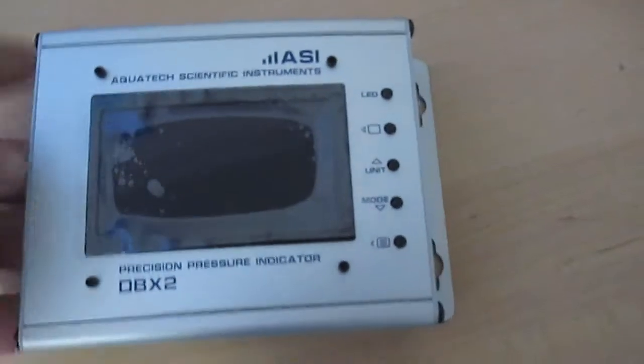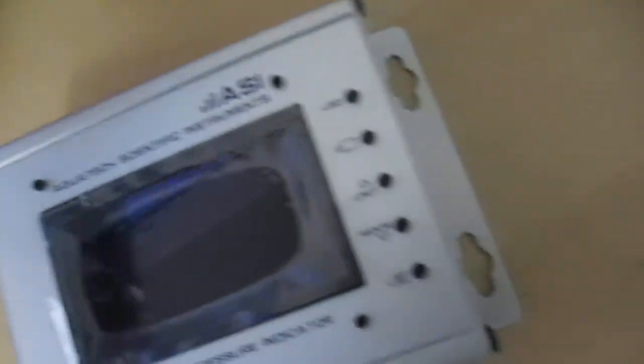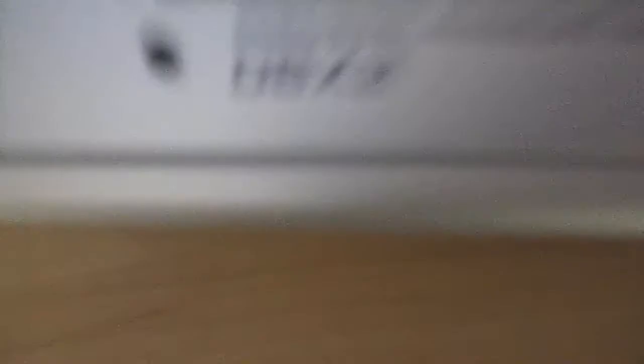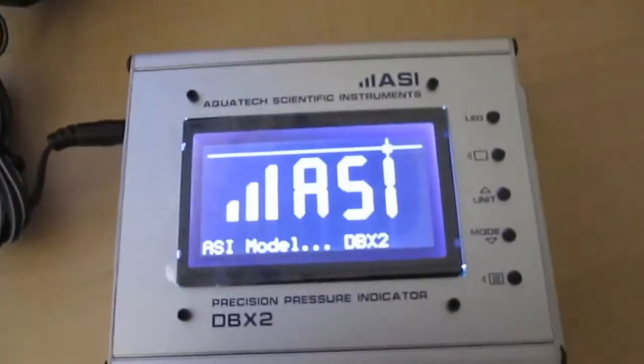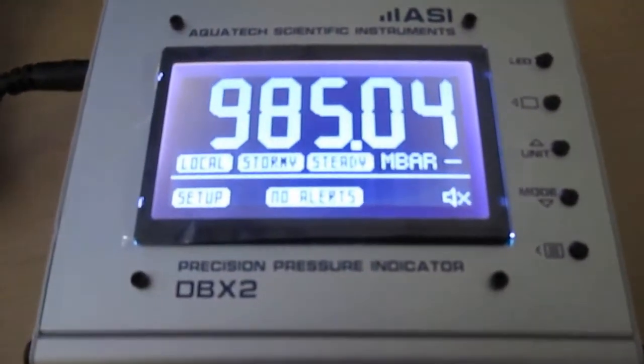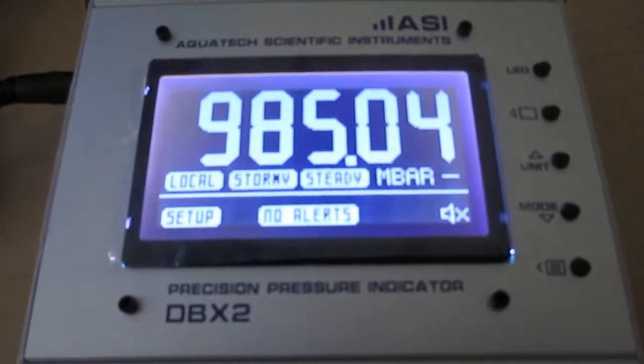I'm going to set this down here. Now what I understand is first off you plug the power pack into the power source, then you plug the power source into the port and there you go. Starting up ASI Model DBX2, and it shows 95.04 millibars.